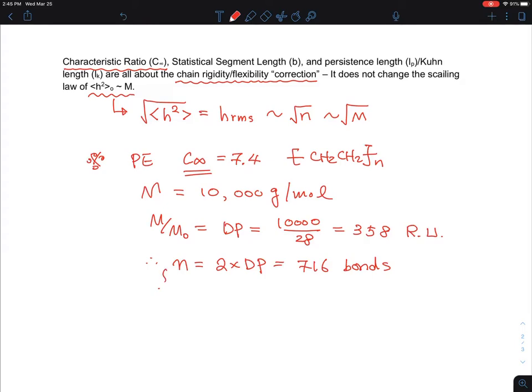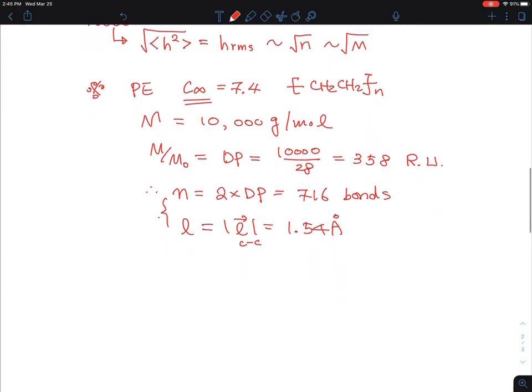And then what other information do I need to have, which is L, that's the size of the bond vector, which for carbon-carbon bond in the backbone is 1.54 angstroms, and I can use that. So therefore, finally,